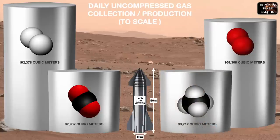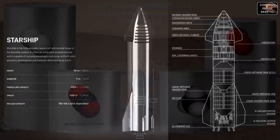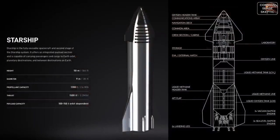The processed methane would have to be kept chilled and under pressure in yet another vessel — unless they are foolishly planning on loading it right into the Starship. And it remains to be seen whether the Starship is even equipped with a refrigeration system capable of keeping these cryogenic propellants chilled and under pressure.